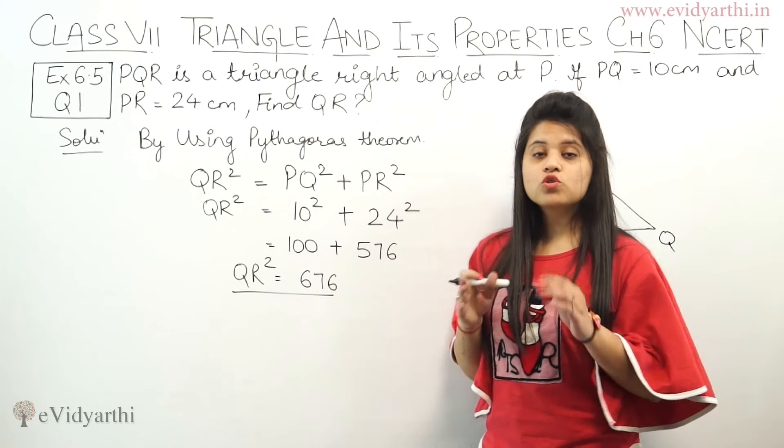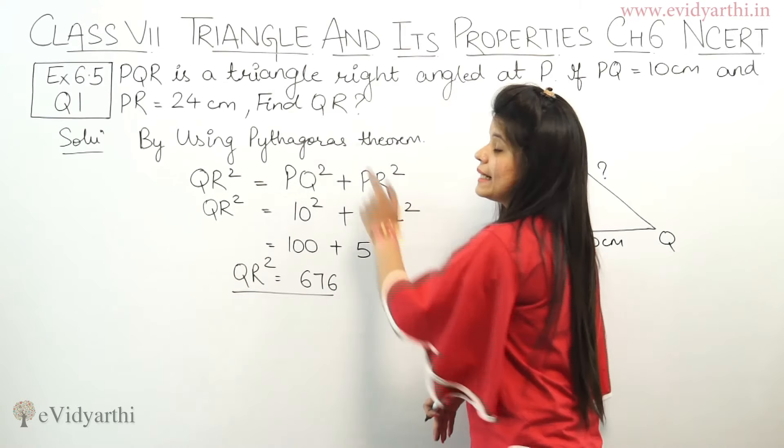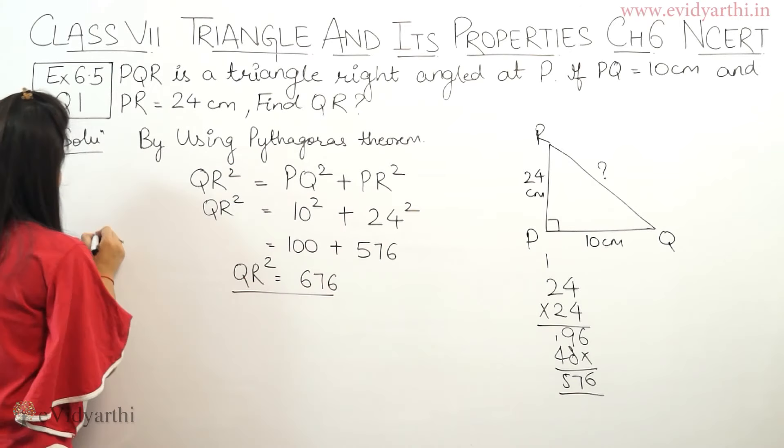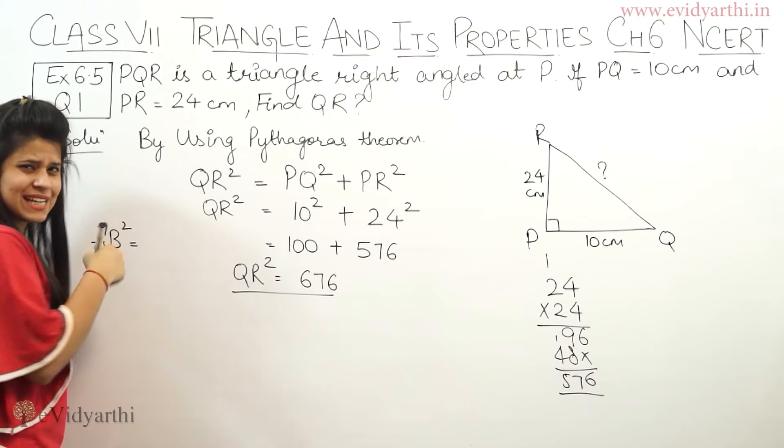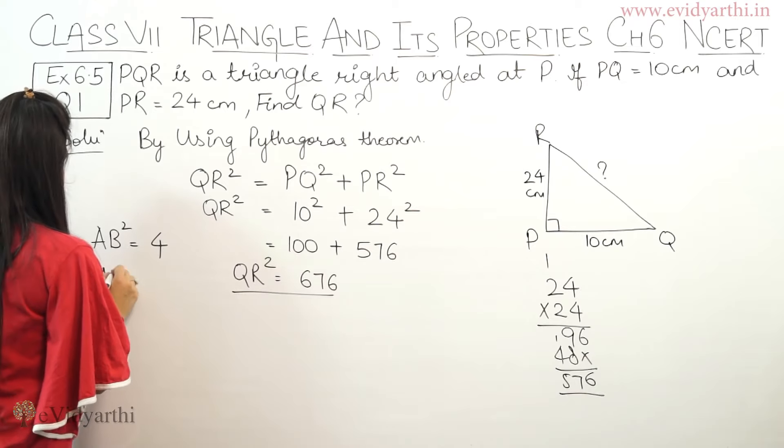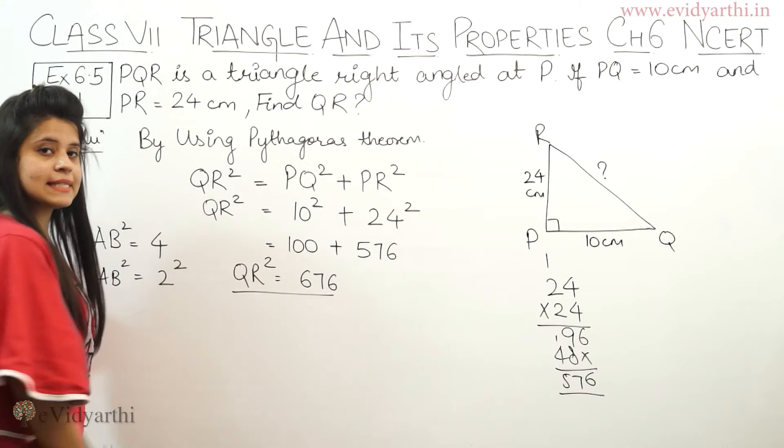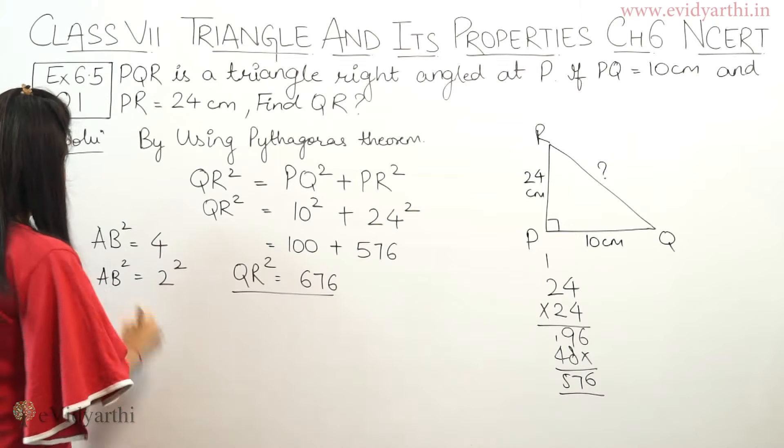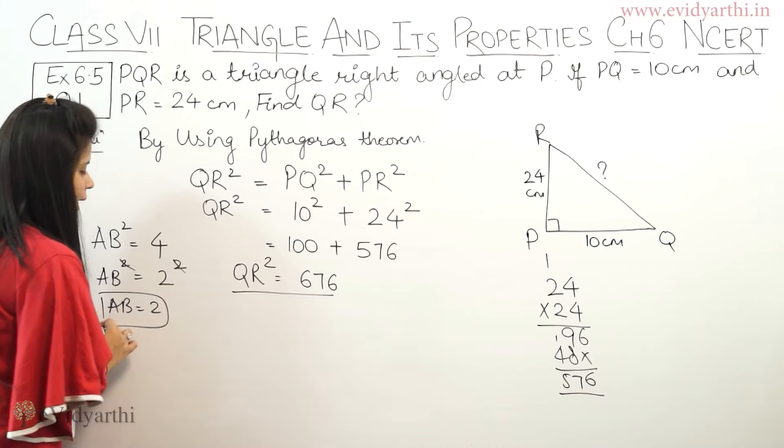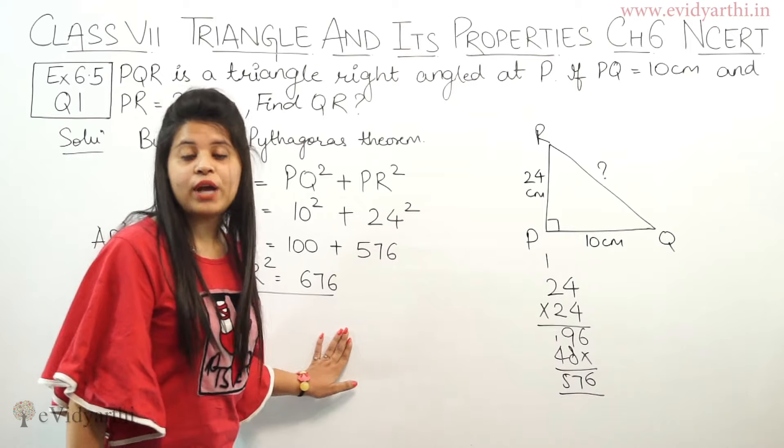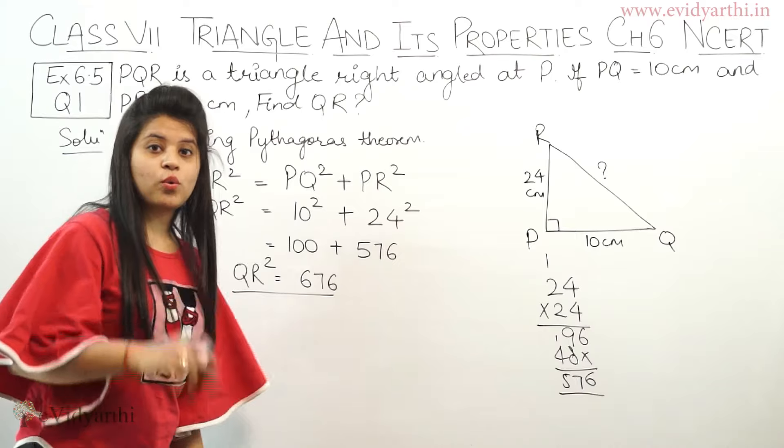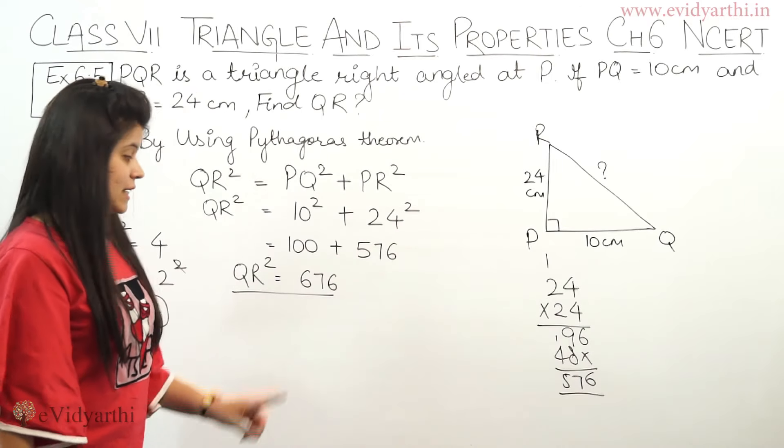So we have 100 plus 576 equals 676. Now, if you have any number, let's suppose AB square or X square equals 4, how can you solve this? You can use square root. Because 2 squared is 4, the square will cancel, which means AB will be 2. This is just an example. This is the same thing you can apply here. You have to find a number where this number is its square, so we can cancel from square to square.